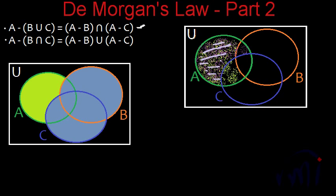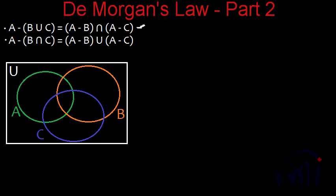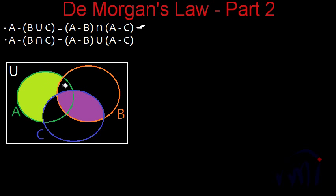Now let's prove the fourth law. Here is a diagram with set A, set B, and set C. The area common to both set B and set C represents B intersection C — this is the overlapping area of B and C. A minus B intersection C is the area of set A which is not in B intersection C. This area shaded in light green represents A minus B intersection C, which is the left hand side of this rule.